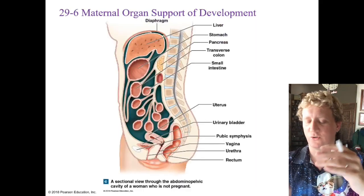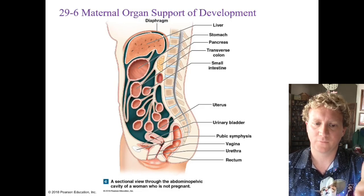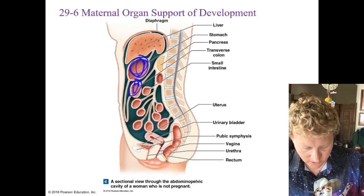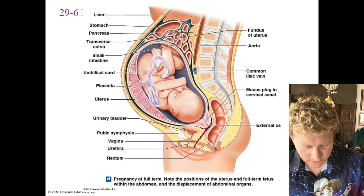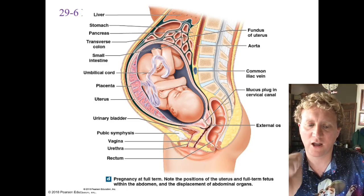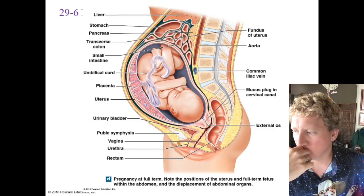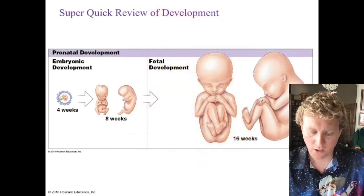One of my favorite diagrams shows the full-term position — baby is kind of flipped, head down, right before it's ready to come out. A quick review of development: at four weeks, embryo has a head; at eight weeks, something that looks alien but with human characteristics; at sixteen weeks, baby is looking more like a baby. After that baby just bulks up, and eventually we get to childbirth — also known as parturition. Technically it's the forcible expulsion of the fetus from the uterus, leading to labor: strong rhythmic contractions of the uterus.